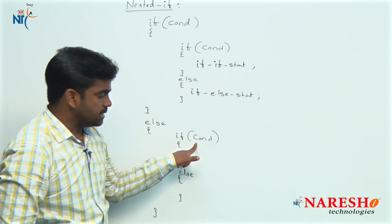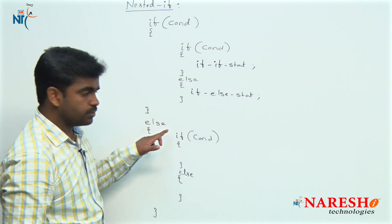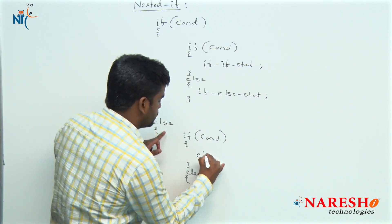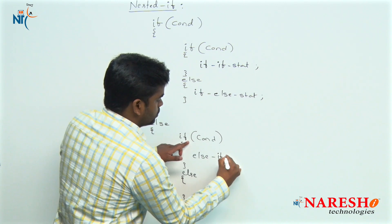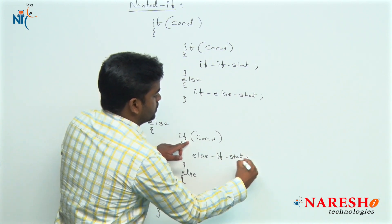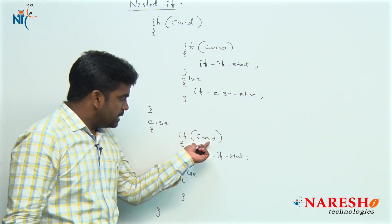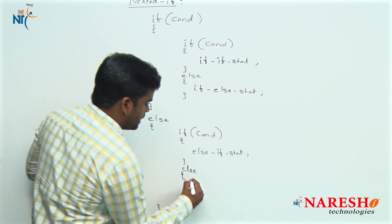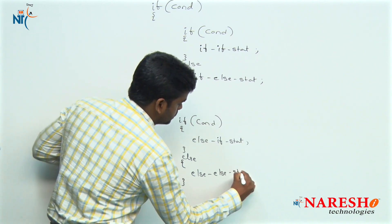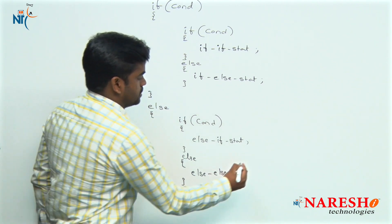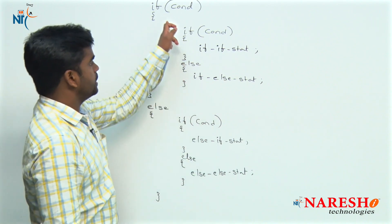When the outer condition fails, control comes directly to the else block and checks its inner condition. If the inner condition inside the else block is true, the else-if block statements execute. Whenever this inner condition is also false, the outer else block statements and inner else block statements execute. This is how statements execute among all the blocks.